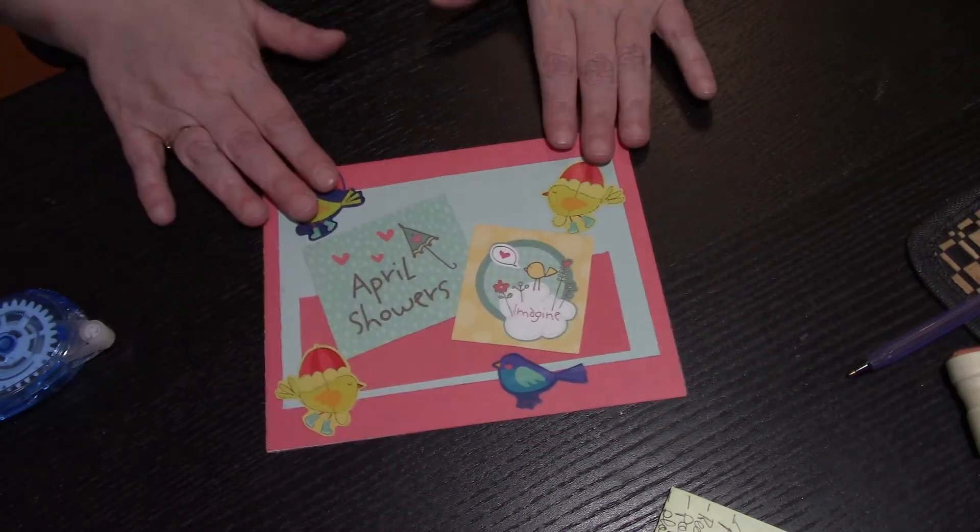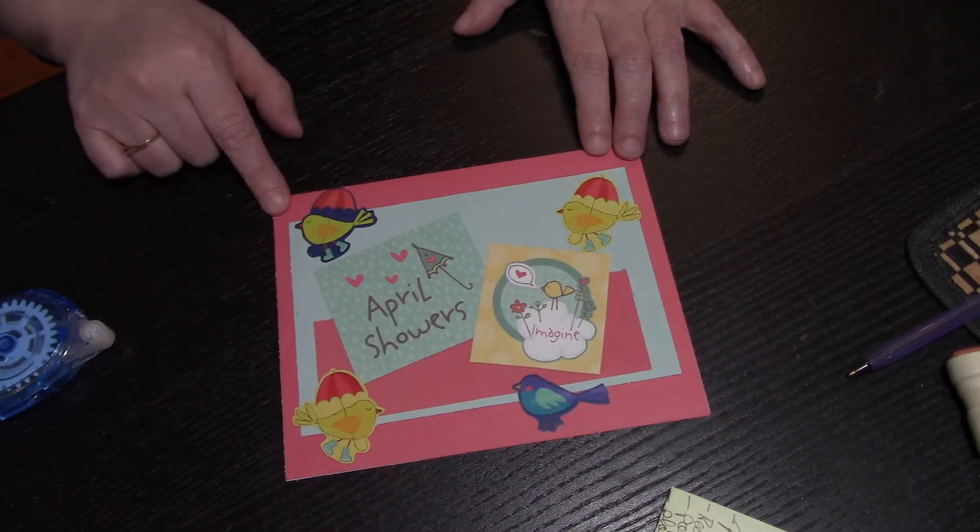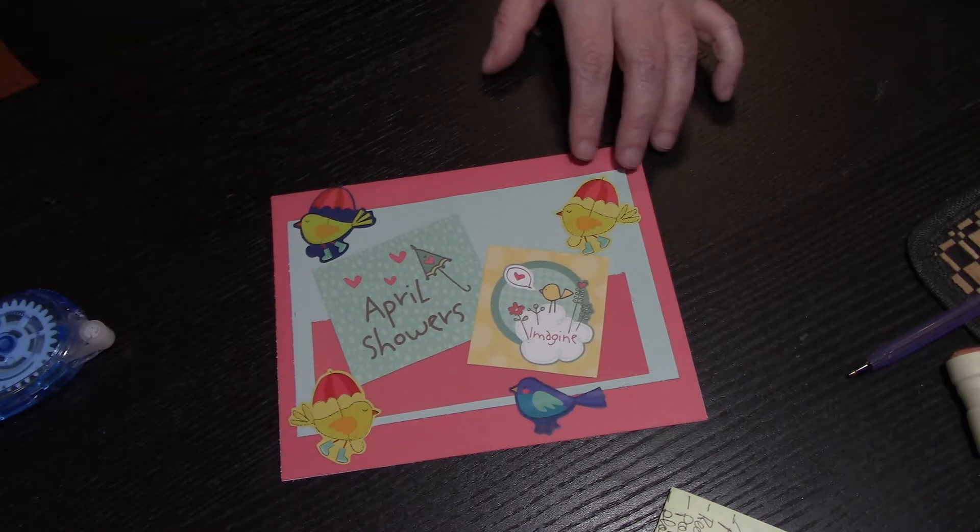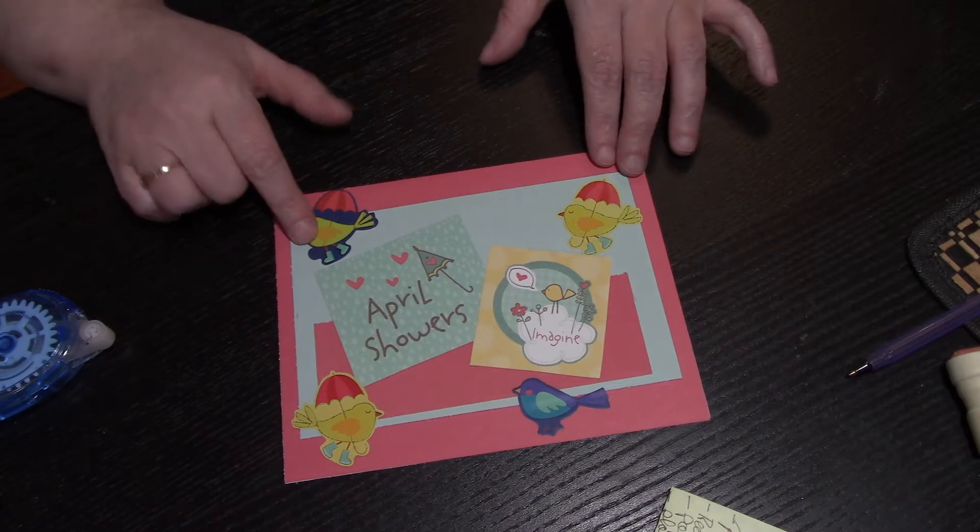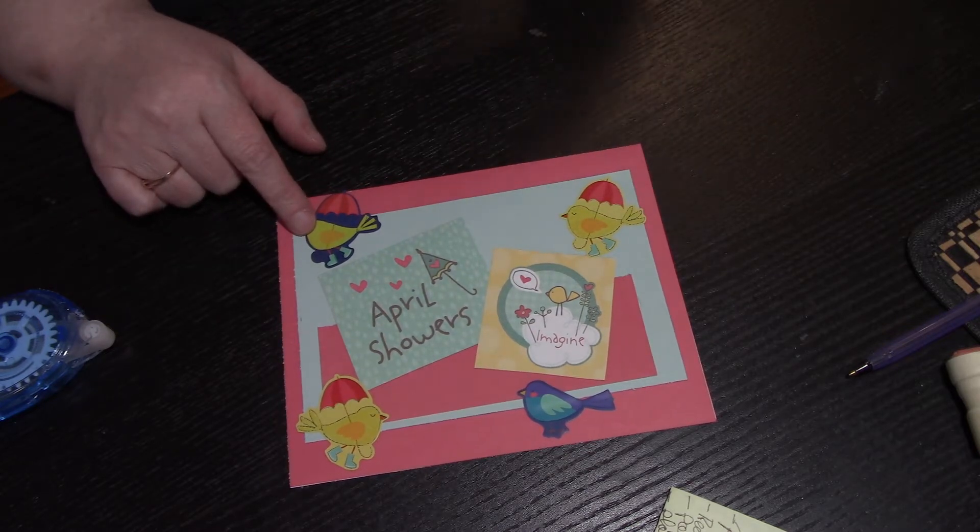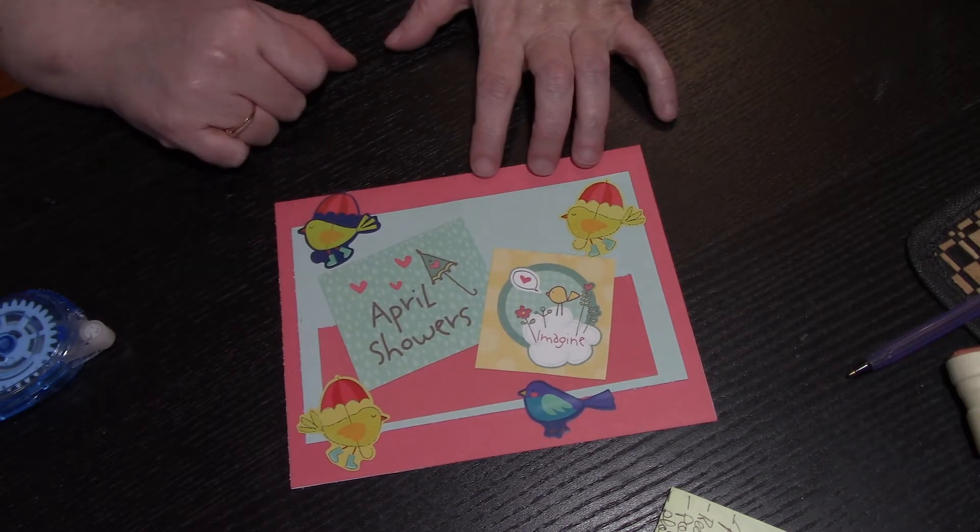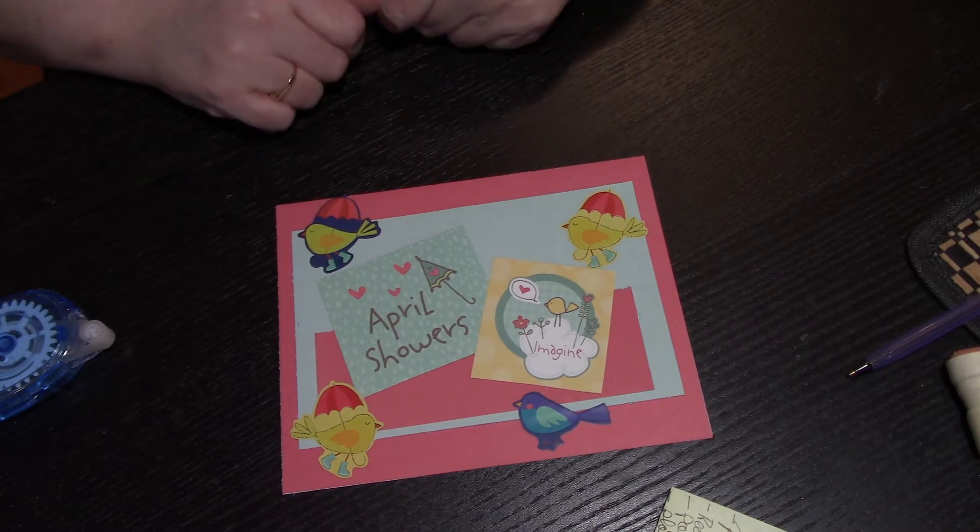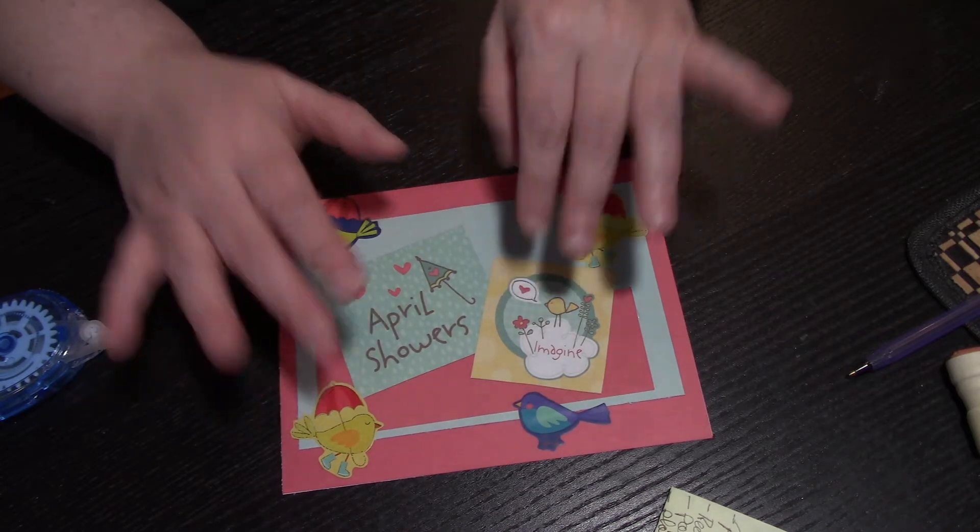So this is going to be my creative collab for TT Scraps and Creative Chaos and Tracy Plans collab this month. It's on birds, so that's my critter for the month. If you like, give me a thumbs up. Until next time, bye bye!